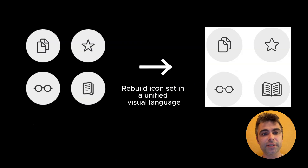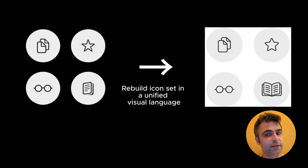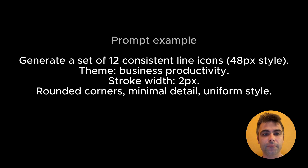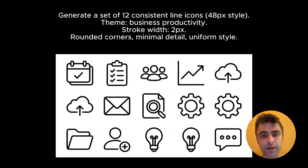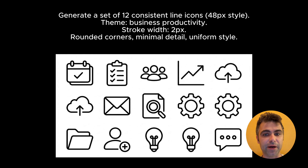I provide a pretty general prompt without mentioning a particular icon that I want to change, and as you can see, the tool fixes the inconsistency. You can do even more with NanoBanana and ask the tool to generate the entire set of new icons with specific visual attributes. The tool generally performs well, but can sometimes add multiple copies of the same icon.